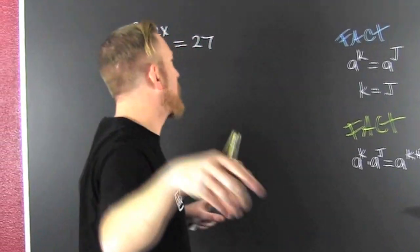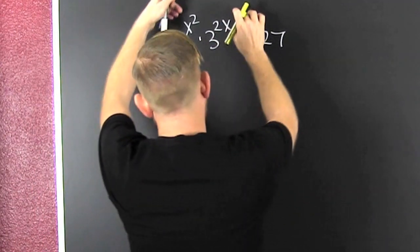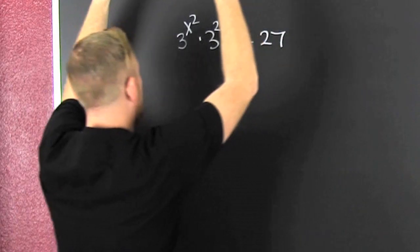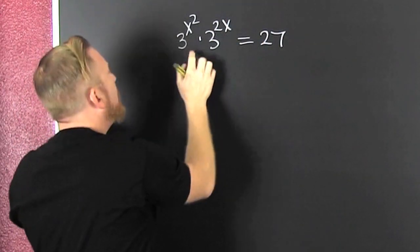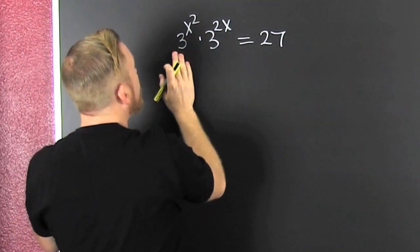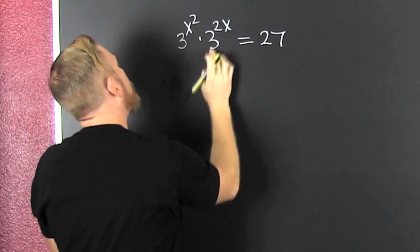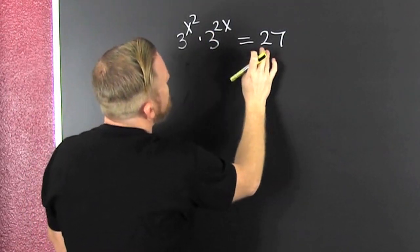Solving exponential equations. What am I talking about? An exponential equation is when the x is in the exponent. It's up there. What do we have? We're trying to solve 3 to the x squared times 3 to the 2x equals 27.